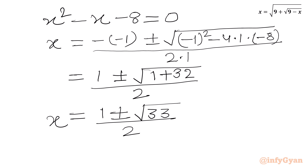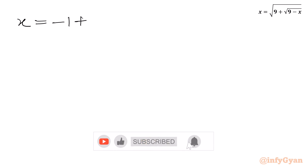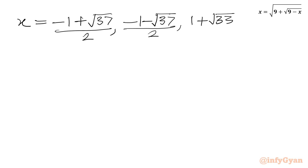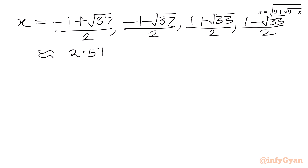In total we have four solutions: x equals (minus 1 plus square root 37) over 2, approximately 2.51; x equals (minus 1 minus square root 37) over 2, approximately negative 3.51; x equals (1 plus square root 33) over 2, approximately 3.4; and x equals (1 minus square root 33) over 2, approximately negative 2.4.